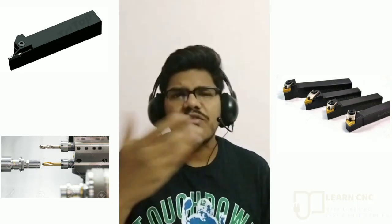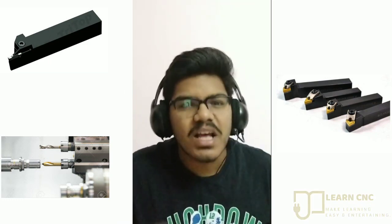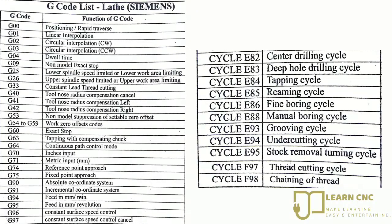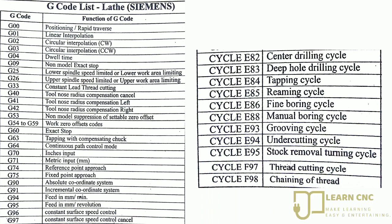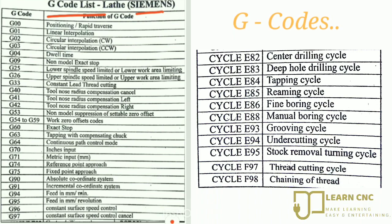On your screen, you can see different CNC tools which are used for different CNC operations. So without wasting any time, let's start the video. These are the G-codes of HMC — that is, horizontal machining centers — such as CNC lathe and turning machines. These codes shown on the screen are generally used for the Siemens panel and also in many other panels. Most of these G-codes are similar to those of the G-codes for vertical machining centers such as milling centers.